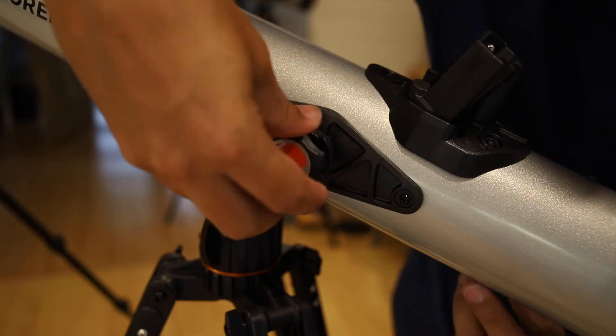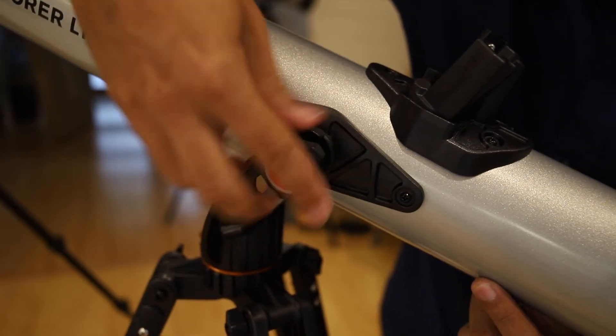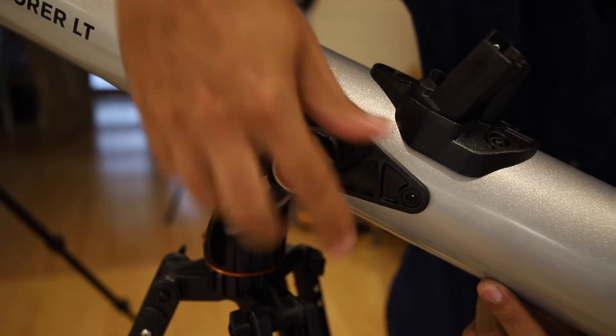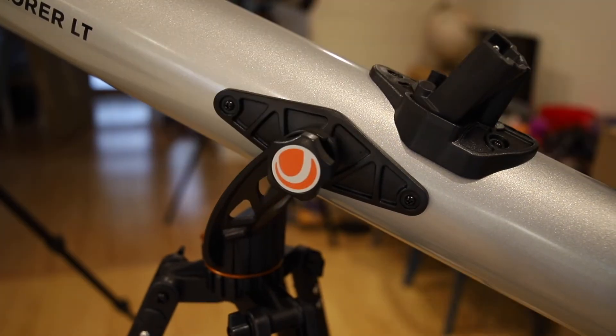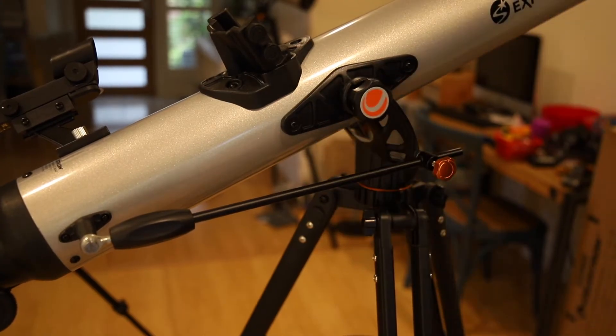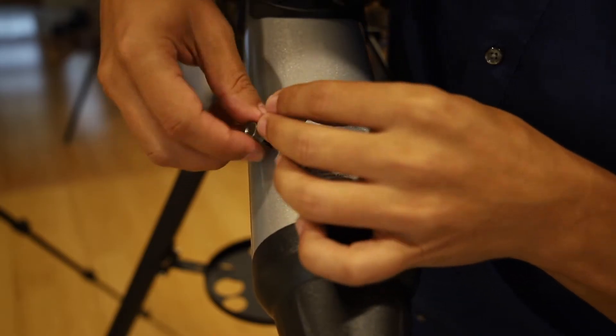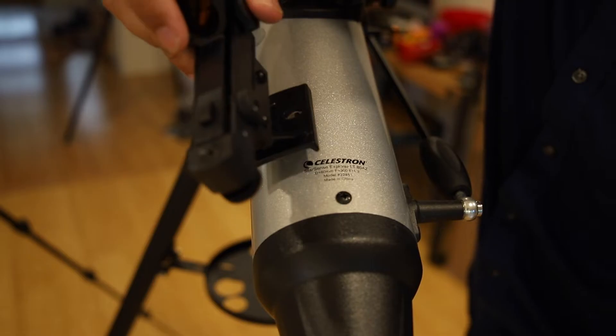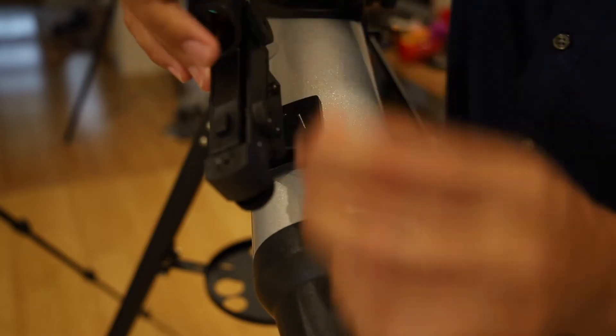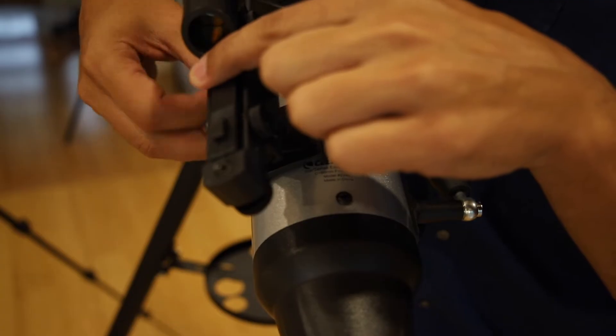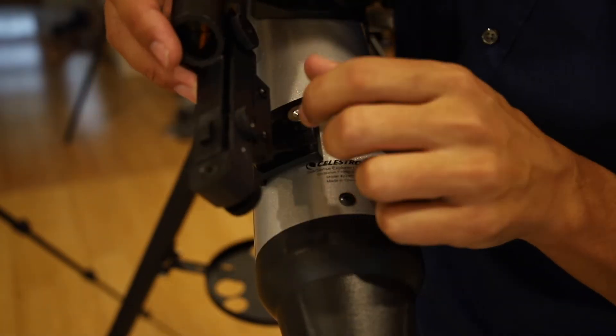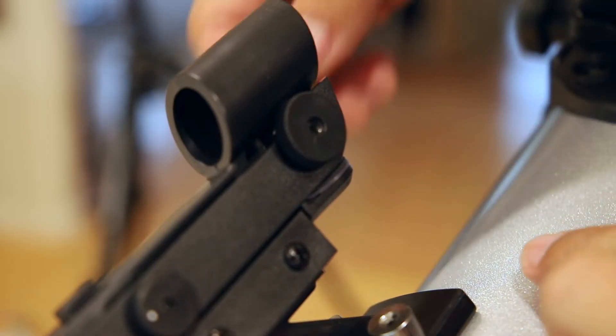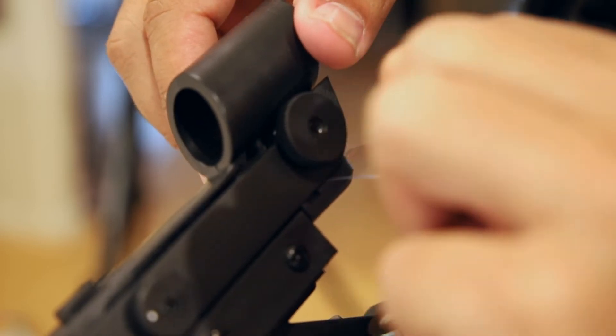Secure the OTA by putting in the orange Celestron nuts there. Remove these two nuts and drop the red dot finderscope in there and put them back on again. There is a small piece of plastic in here for the battery for shipping, so just remove that.